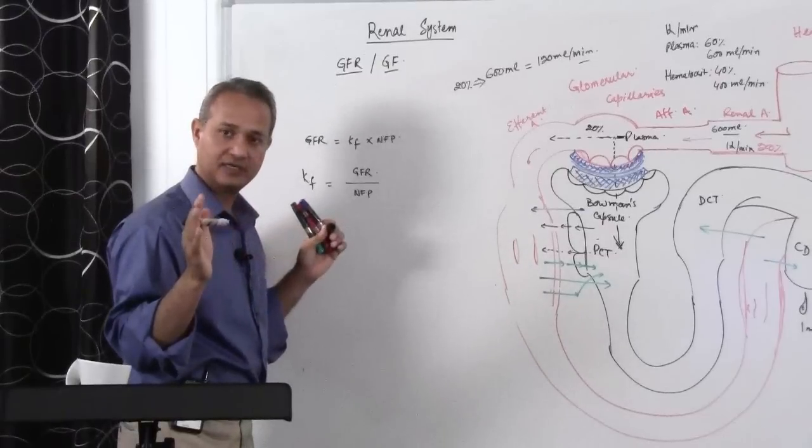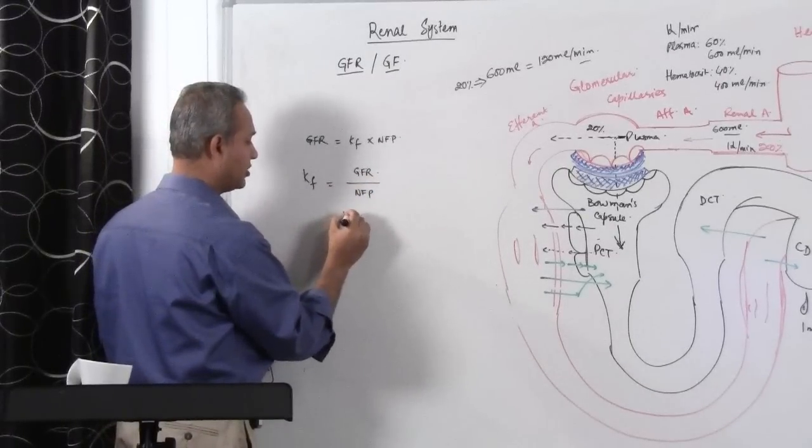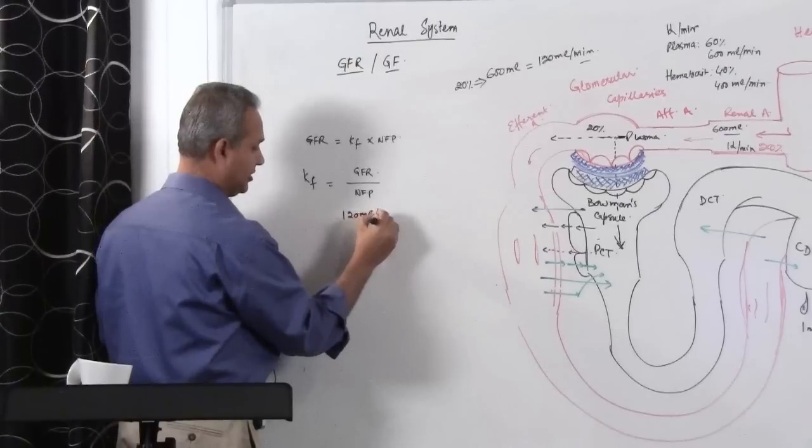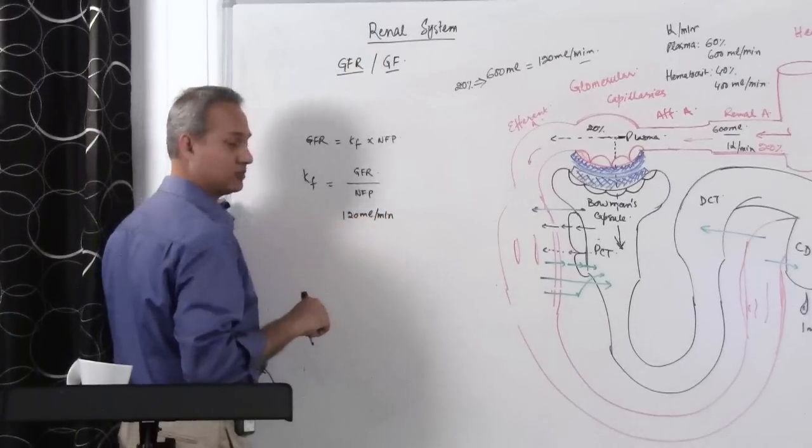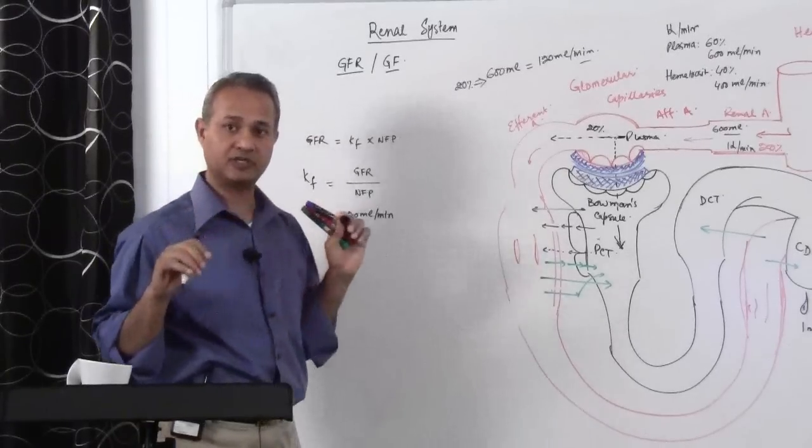For both the kidneys, the GFR per minute, standard GFR per minute is about 120 milliliter per minute. Okay, we will stop for a second.